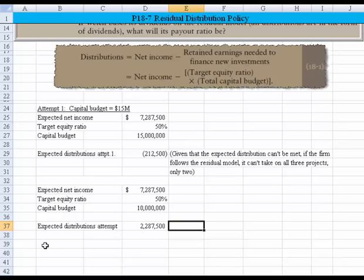And then finally, the question says, what should the payout ratio be? To do that, all we need to do is take the distribution and divide it by the net income. Let me abbreviate this one, too. And that really is the problem. It tells us that the level of capital budgeting that we can take on is $10 million. And given that scenario, the payout ratio would be 31%. Thank you very much.